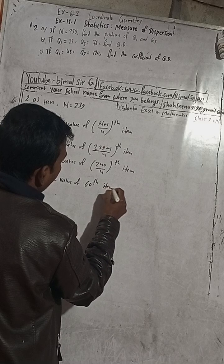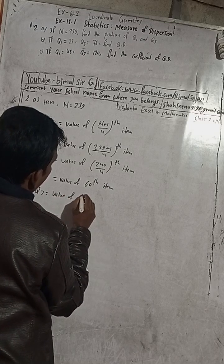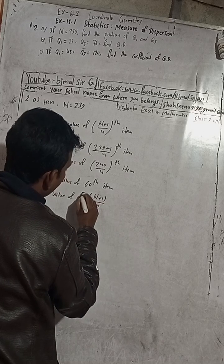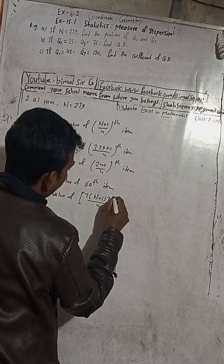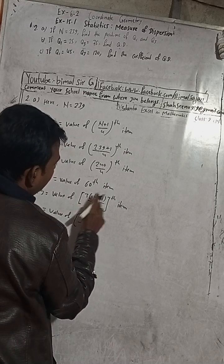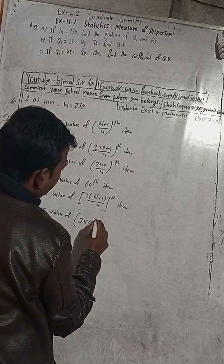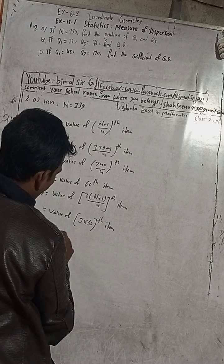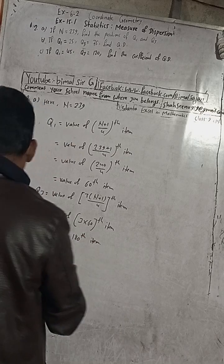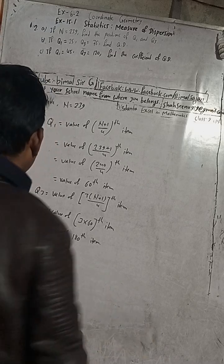In the same way, Q3 is equal to value of 3 times (n+1)/4. Using the same value, 3 times 60 equals 180th item. So this is the solution of part (a). The answer is Q1 equals value of 60th item and Q3 equals value of 180th item.